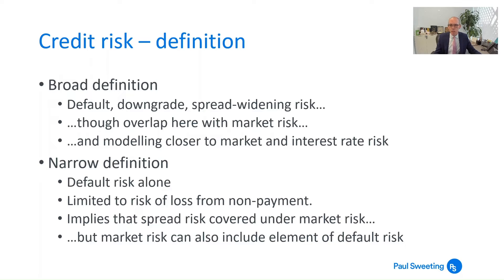In the broadest definition of credit risk, you're talking about defaults but also downgrades, and the impact of the widening of credit spreads on the value of a security. This has a big overlap with various other types of market risk — risk in relation to investments whether it's equities, interest rates, government bonds, or currencies — because you can model all of those using the same techniques used to model the change in value of a bond when the spread has widened. While that's interesting and useful, it's part of a broader area of modeling market and investment risk, so it's not really what I'm trying to do here.